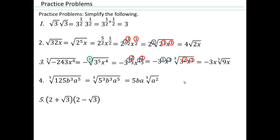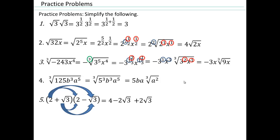How do we do that? Distributive property of multiplication over subtraction — use it, and also over addition. This multiplication distributes over both addition and subtraction. So 2 times 2 will be 4. 2 times negative square root of 3 will be negative 2 times square root 3. 2 times square root 3 will be positive 2 times square root 3. And square root 3 times negative square root 3 will be negative square root 9, which is 3. You can see how 4 minus 3 is 1.